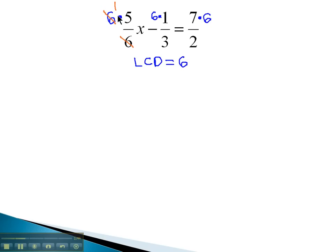Now, I have 1 times 5x. Well, 1 times 5x is just 5x. Minus, in the second fraction, 6 divided by 3 is 2. Now, this reads 2 times 1, which is just 2. Equals 6 divided by 2 is 3, and now our problem reads 7 times 3, which is 21. Notice this has given me a new equation with no fractions in it, because all the denominators reduced with the LCD.